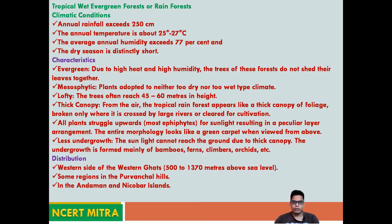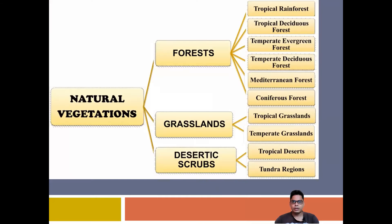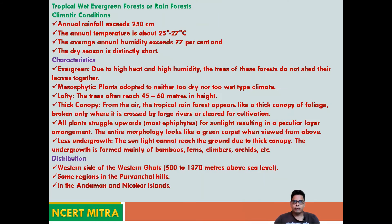In this video, we are going to discuss the types of natural vegetation and their location. The first type is tropical rainforest, also known as tropical wet evergreen forest. 'Wet' means the soil retains moisture throughout the year. 'Evergreen' means these trees never shed their leaves. This area receives more than 250 cm annual rainfall and temperatures of 25 to 27 degrees centigrade.